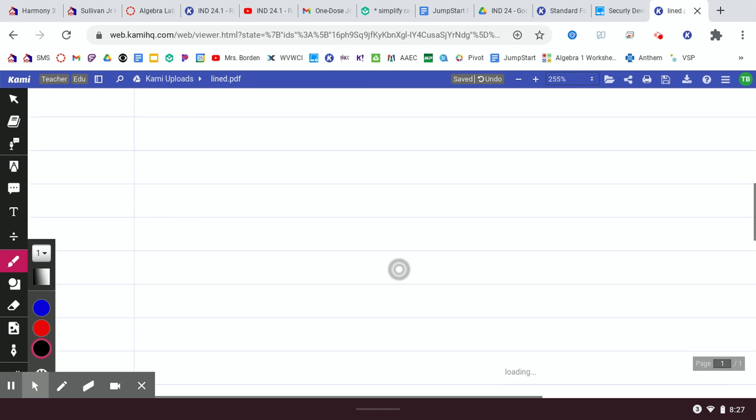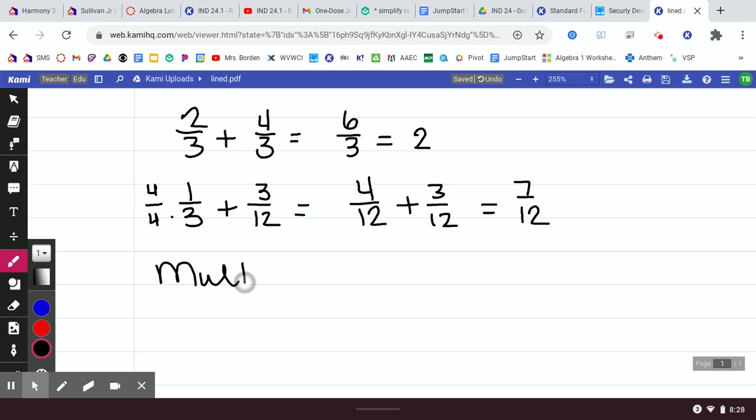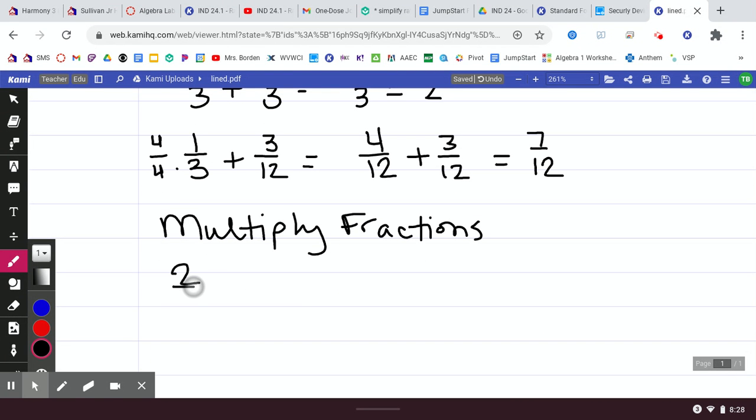And then, the last thing we're going to review is if we multiply fractions. A little bit easier because you don't have to worry about a common denominator. If we have 2 thirds times 4 over 3, you just simply multiply across the top, 2 times 4 is 8 and you multiply across the bottom, 3 times 3 is 9. Always reduce fractions if you can, like we did in that first example. Alright, that was our little bit of review that we needed.